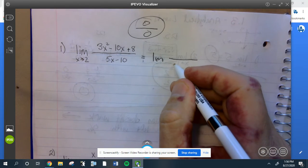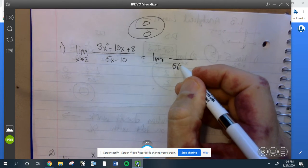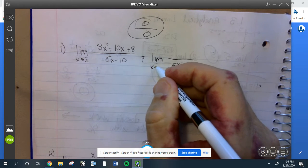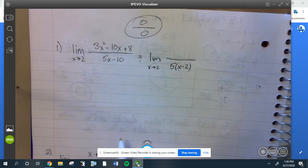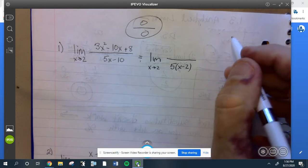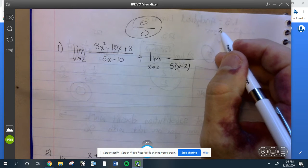So the bottom is easy, the bottom factors like this: 5 times x minus 2. The top factors like a quadratic, so you figure out how that factors. The way I do is I go 3 times 8 is 24.